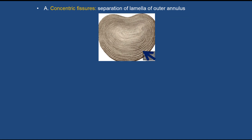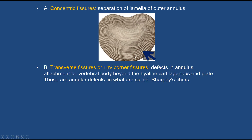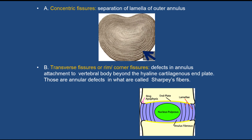Here is a representation of the annulus. The inner laminae and outer layers are shown. Concentric fissures are secondary to separation of these lamellae. Transverse or rim/corner fissures are defects in the annulus where it attaches to the vertebral bodies — defects in Sharpey's fibers. This cartoon shows where the annulus attaches to the ring apophysis of a vertebral body. With aging, small fissures occur here, and they are again a part of normal aging.